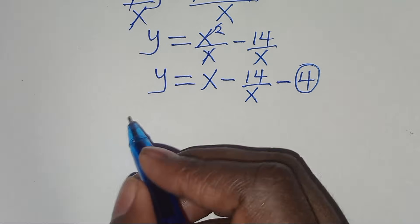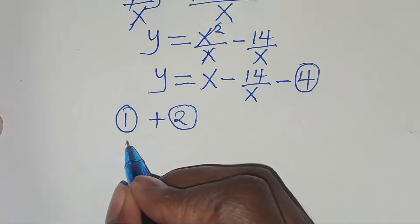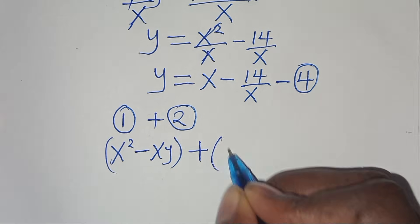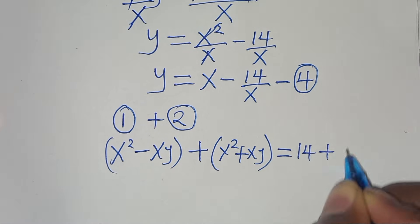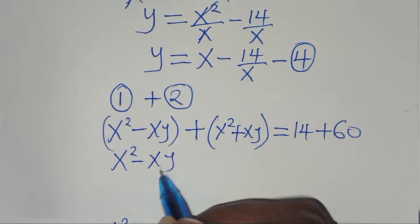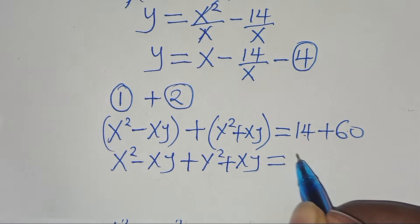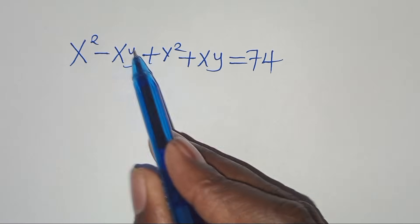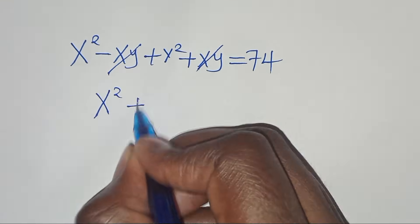The next step: let's add equation 1 and equation 2. We have x squared minus xy plus y squared plus xy equals 14 plus 60. The minus xy and plus xy cancel, so now we have x squared plus y squared equals 74.